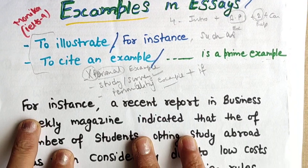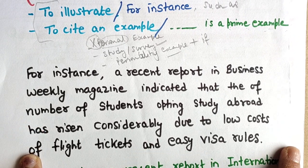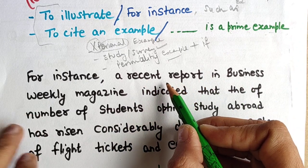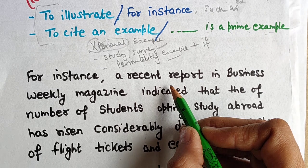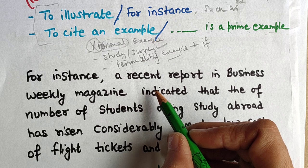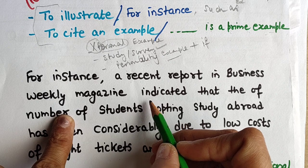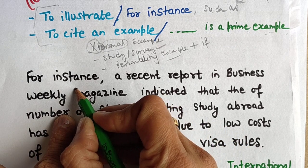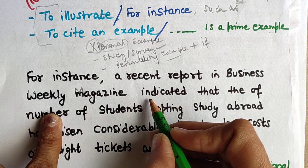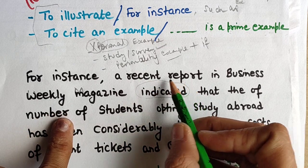There are many ways to write examples. The first one uses 'for instance': 'For instance, a recent report in Business Weekly Magazine indicated that...' This is important language to use when writing a survey or report-style example. Note the capital letters: Business Weekly Magazine.